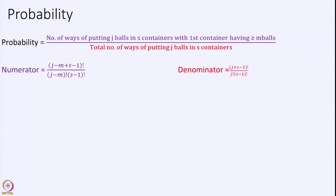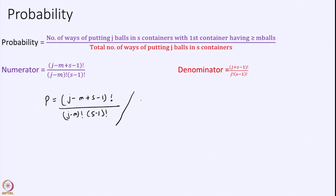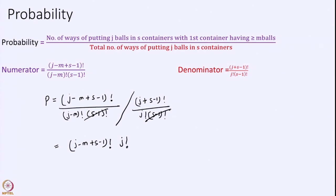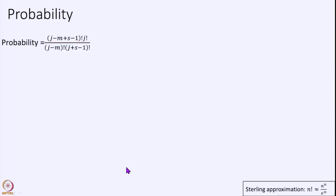Now I have the numerator and denominator, so I can find the probability as their ratio. The (s − 1)! terms cancel, which is good news. What I am left with is j! comes to the numerator.